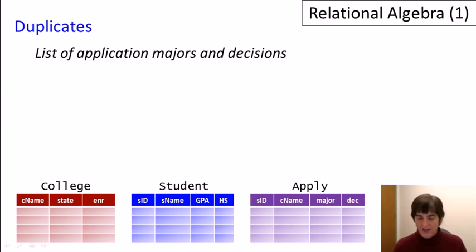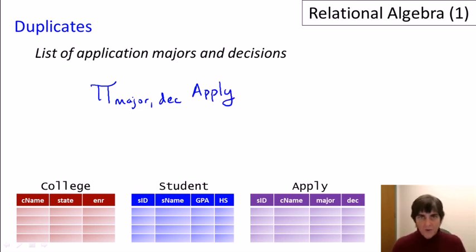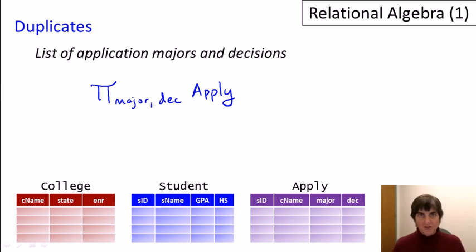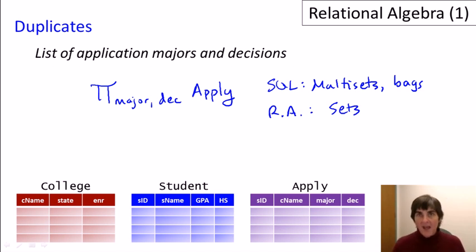Relational algebra always eliminates duplicates. For example, if we ask for the list of majors and decisions from the apply relation — PI(major, decision)(apply) — we might expect many duplicates like CS/yes, CS/no, EE/no. But the semantics of relational algebra says duplicates are always eliminated, so we get one tuple per unique combination. This differs from SQL, which is based on multi-sets (bags) and does not eliminate duplicates by default. A multi-set relational algebra exists as well, but these videos focus on set relational algebra.